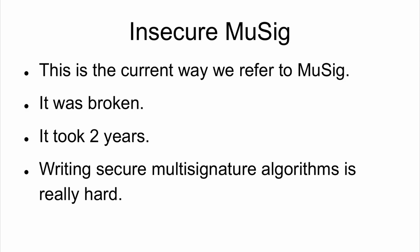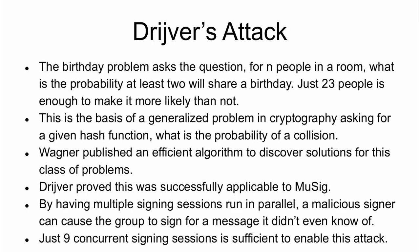It was broken thanks to something known as Driver's attack. This gets into cryptography, where there's something known as the birthday problem: for N people in a room, what is the likelihood at least two share a birthday? Just 23 people is enough to make it more likely than not — so we likely have a few people here who share a birthday. That sounds insane; you'd think you need 180 people, but nope, 23. This can be generalized: instead of asking what are the odds people share a birthday, we can ask what are the odds a set of hashes will cancel out — looking for a collision, where two different inputs to a hash function produce the same output.